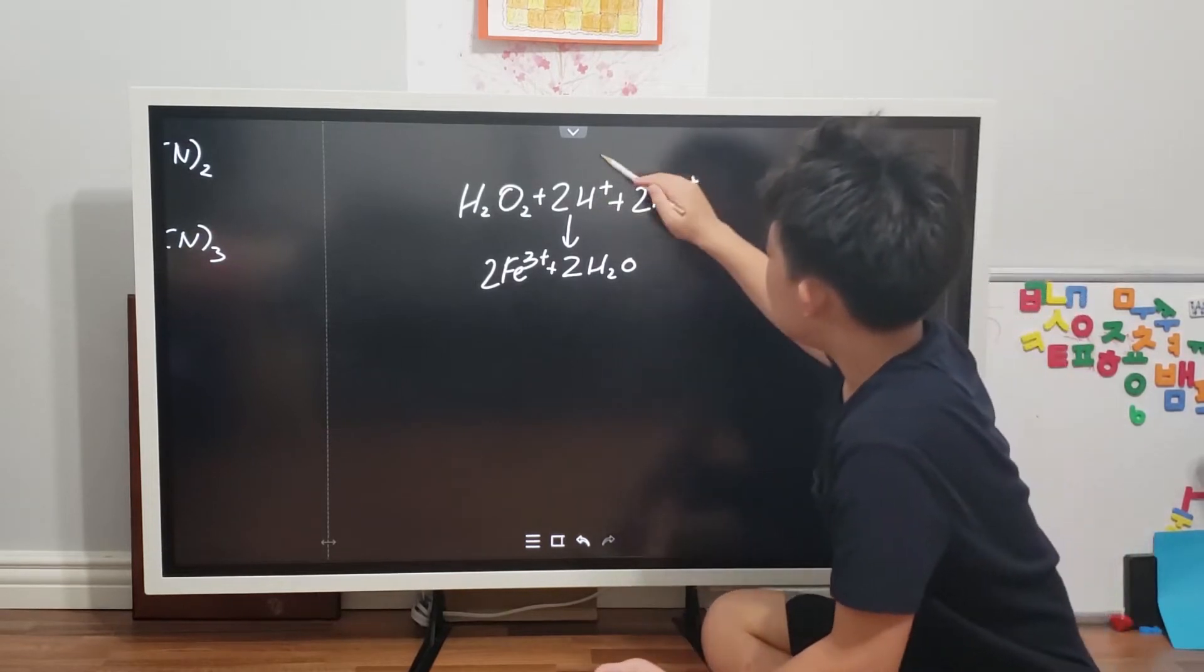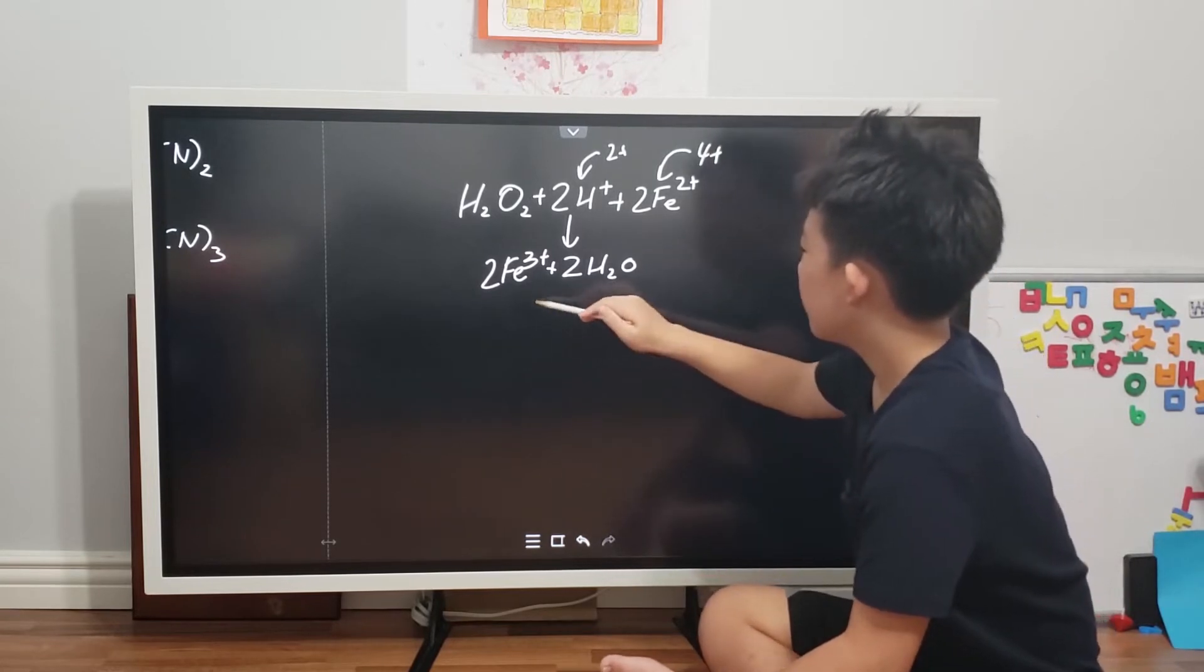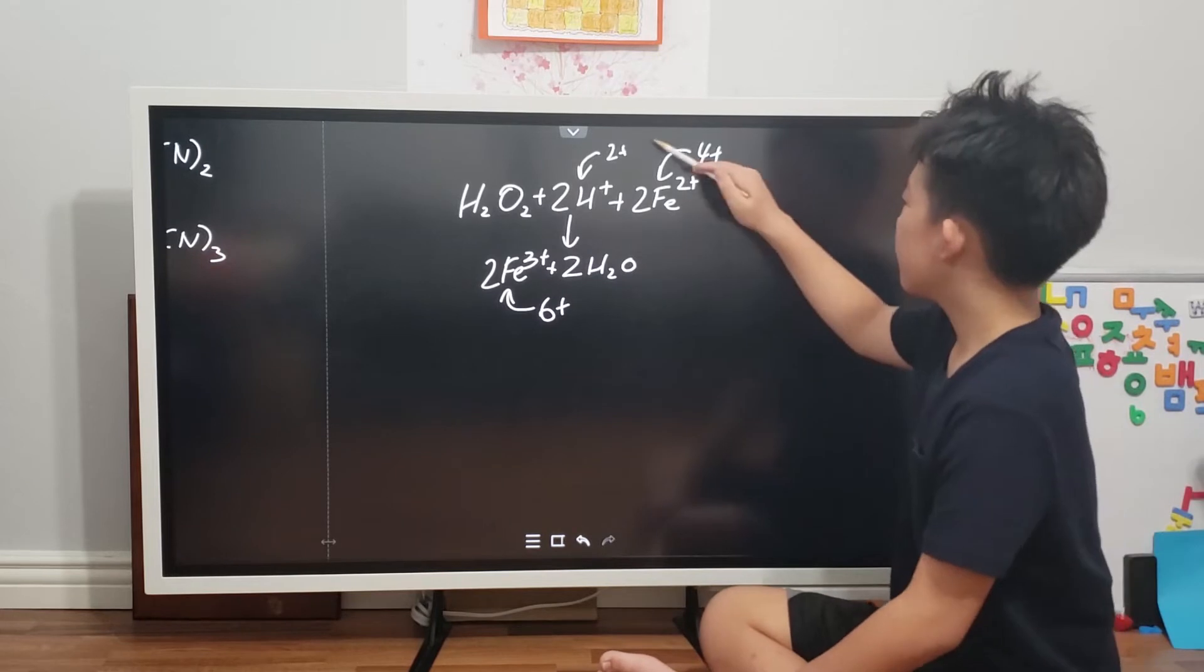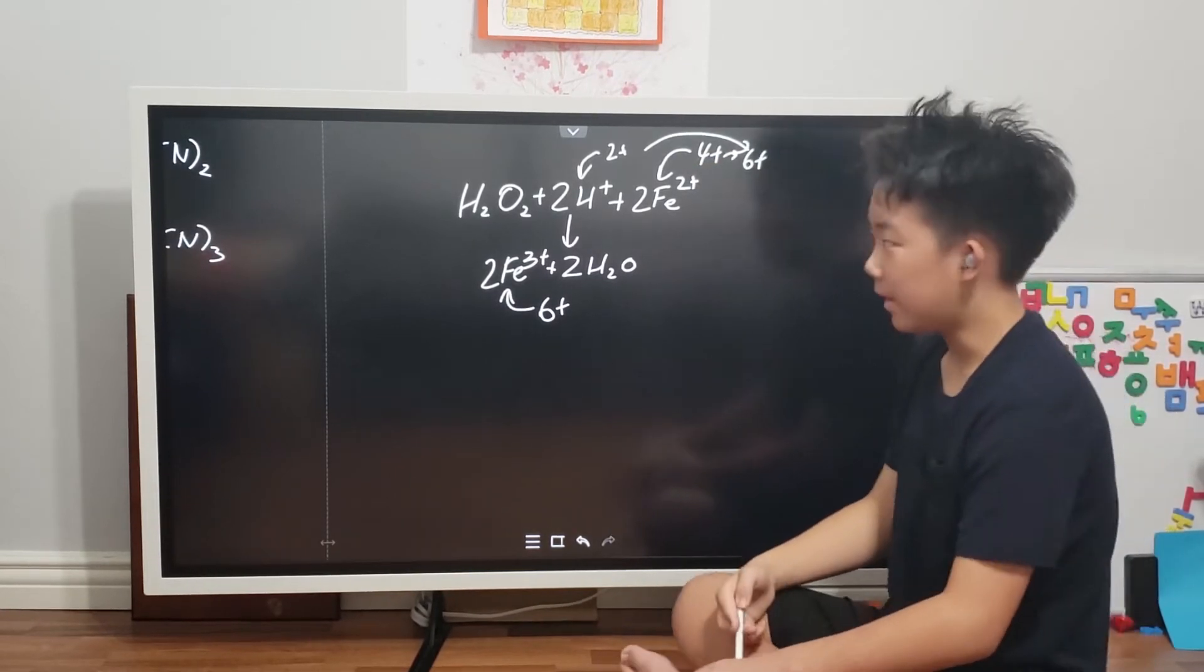And now let's see if it's balanced with respect to charge. Well, these two protons together would be 2+, these two ions together would make 4+, and this is balanced as follows.